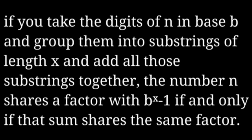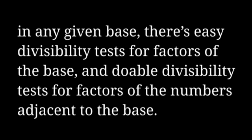So in decimal, if you add the digits of a number together, the result can tell you what factors the original number has in common with 10 minus 1, which is 9. If you do the same thing, but instead of adding the digits you add pairs of digits, you can see what factors the original number has in common with 1 less than 10 squared, which is 99. 99 is divisible by 9 and we already have a divisibility test for that, so dividing that out, we're left with 11. And would you look at that, 11 is exactly 1 more than 10! This will happen in any base, because for any number n, n squared minus 1 equals n plus 1 times n minus 1. Neat! In any given base, there's easy divisibility tests for factors of the base and doable divisibility tests for factors of the numbers adjacent to the base.